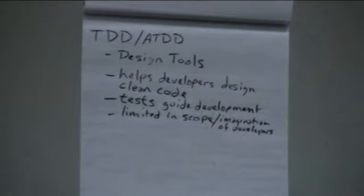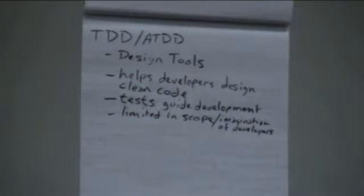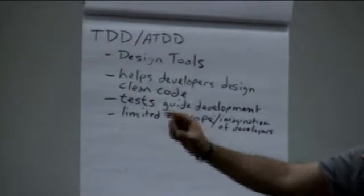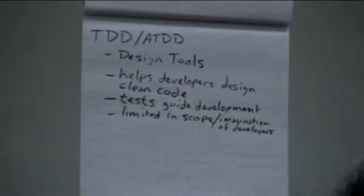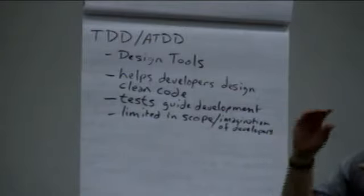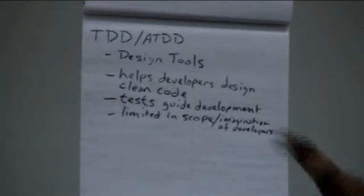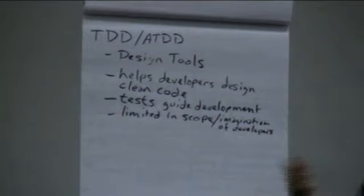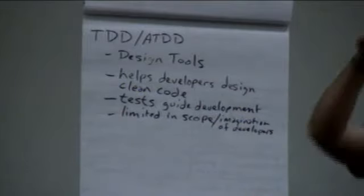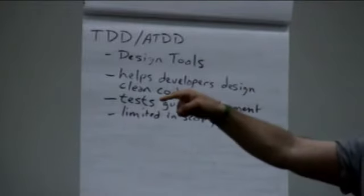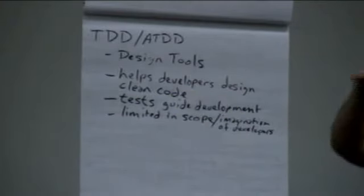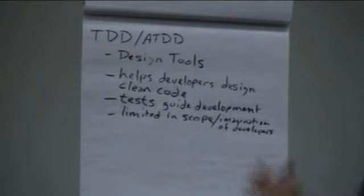Test-guided development has one key limitation. We're looking at very small components. When we talk about test-driven development, we're not talking about the entire system — we're talking about that class, that module, or that method. We're not designing our tests to see whether method A, B, C, and D all connect together and work with each other in every direction. That's not the purpose. So TDD is a great design tool, but it's not really testing.